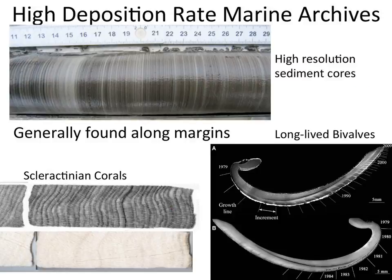We need to look at high deposition rate marine archives for this question. We can find places in the ocean where sediment records are high resolution and ideally annually laminated, though that's very rare. We can also go to biogenic carbonates like scleractinian corals or long-lived bivalves, which can provide multi-century long records with annual and subannual resolution — that's why these proxies are really valuable. They're generally found in the coastal zone or shallower shelf areas rather than the deep ocean.